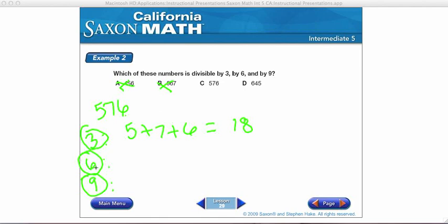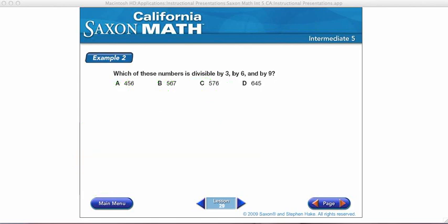Therefore, it's divisible by 6. So, 3, 6, and 9 are all factors of 576. So far, it looks like C is our winner, but let's check D just in case they give us two answers.